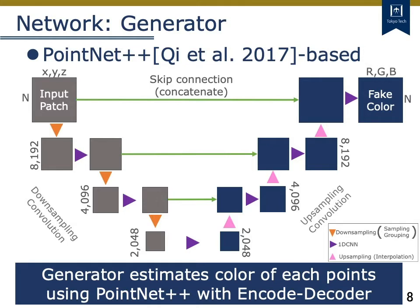The generator estimates color information corresponding to each input point. These colors are estimated by a PointNet++ based network. PointNet++ is one of the well-known networks for point cloud processing with convolutional operations.